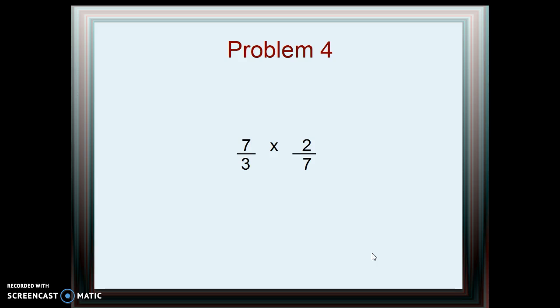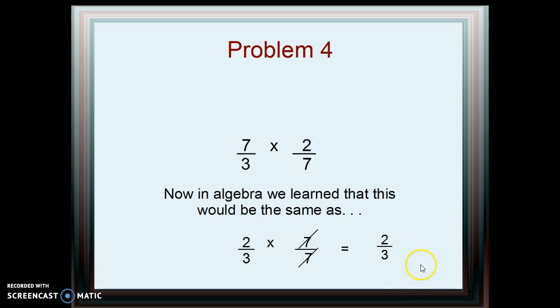If we look at this problem, 7/3 times 2/7, we know from mathematics that it's the same as 2/3 times 7/7. And 7 over 7 is 1, so the answer is 2 divided by 3, or two-thirds.